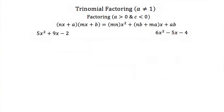Now in these examples, these are exactly the same. Our a is positive, but in this case, our constant term is negative. Now the only way to have two numbers multiply together to get a negative number is if you have a positive times a negative number.